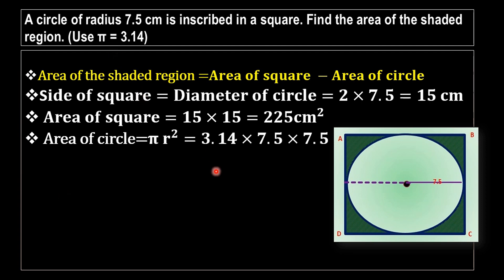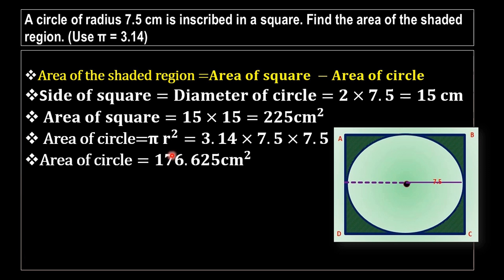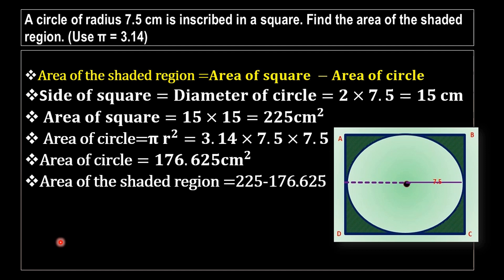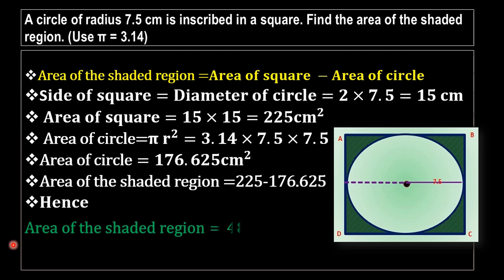The area of the circle equals π × r² = 3.14 × 7.5 × 7.5 = 176.625 cm². Therefore, the area of the shaded region equals 225 − 176.625 = 48.375 cm². That is our required answer.